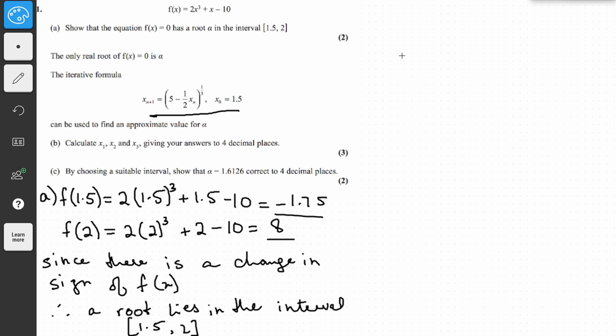So this is simple. You just enter the value 1.5 into your calculator, and then you write 5 minus half answer, all of it raised to the power of 1/3. And then just keep pressing equals and you will get the answers for x₁, x₂, and x₃.